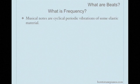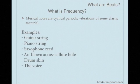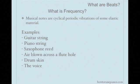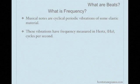Musical notes are produced by different instruments, and these instruments have a cyclical periodic vibration of some elastic material. For example, a guitar has a string that vibrates, pianos have strings, violins have strings, there's a reed in the saxophone, the air blown across a flute hole will vibrate, the skin of a drum vibrates, and the voice has the larynx which vibrates. These vibrations have frequency measured in hertz, which is cycles per second — that is, the elastic material will move back and forth so many times per second.